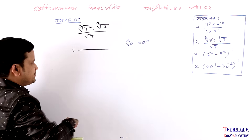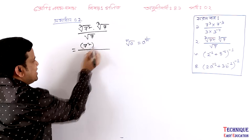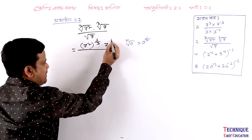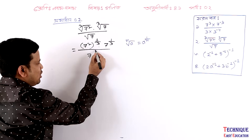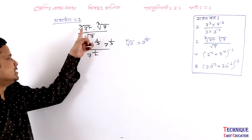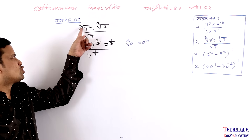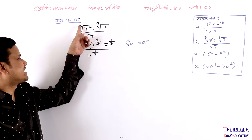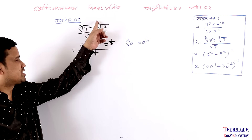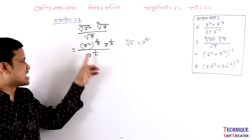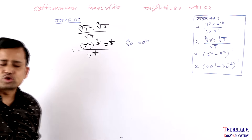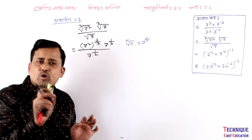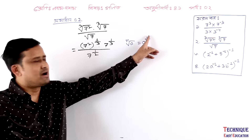So 7 square root. A to the power 1 by 3 into 7 — the power 1 by 3. And 7 is 1 by 2. Then seven square root. The root is m, that is the root. The root is 3, so the power is 1 by 3. The root is 3, so the power is 1 by 2. So the root is 3 by n, that's 1 by n.